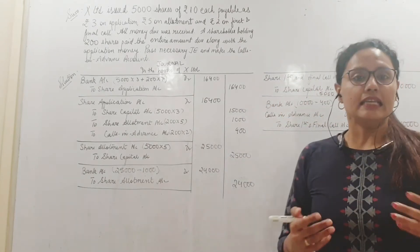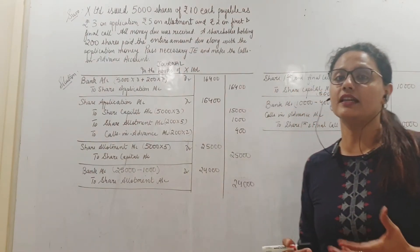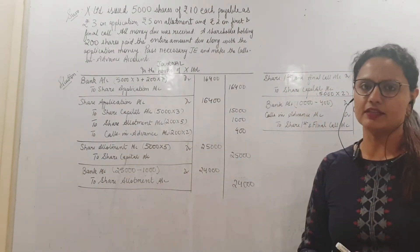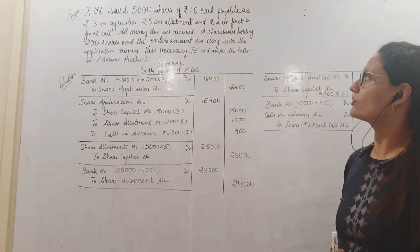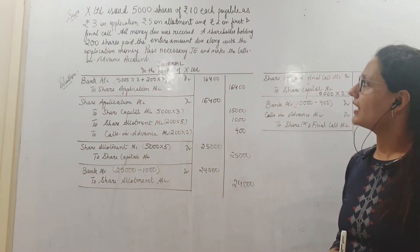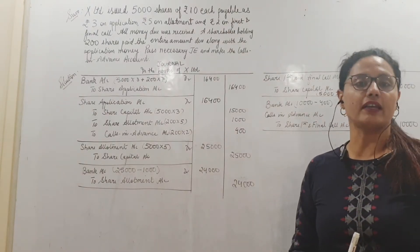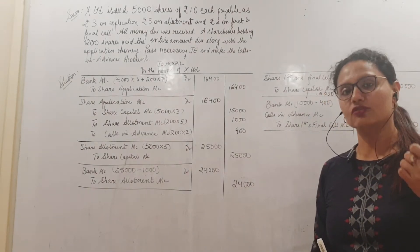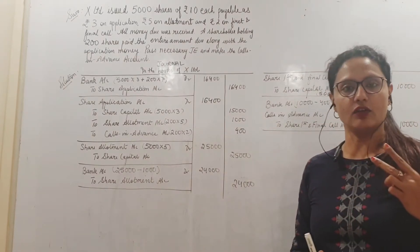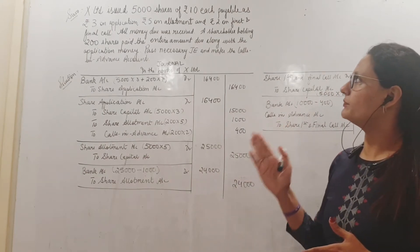Now, in this video, we talk about calls in advance, the concept of calls in advance. Let us see what the problem has to tell us. X limited issued 5000 shares of 10 rupees each, payable as 3 on application, 5 on allotment and 2 on the first and final call. So we have 3 installments here that sum up to 10.